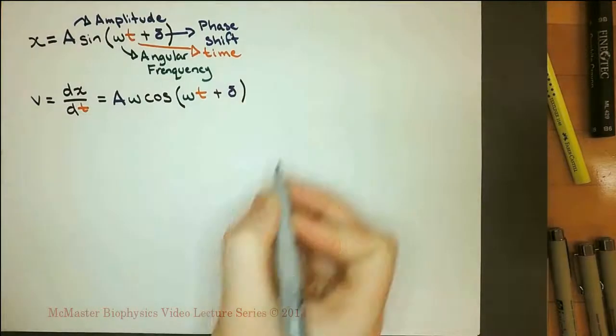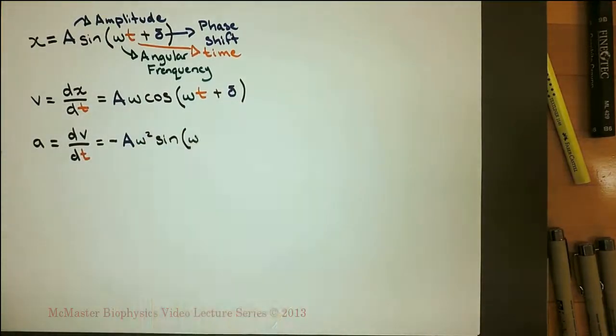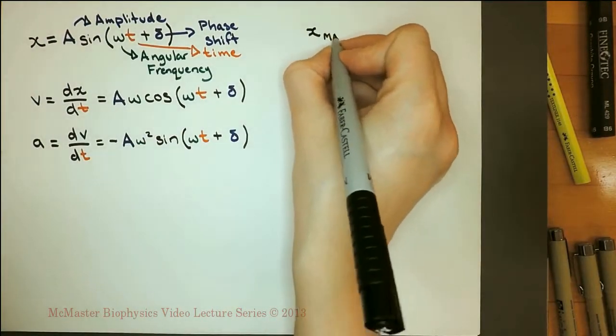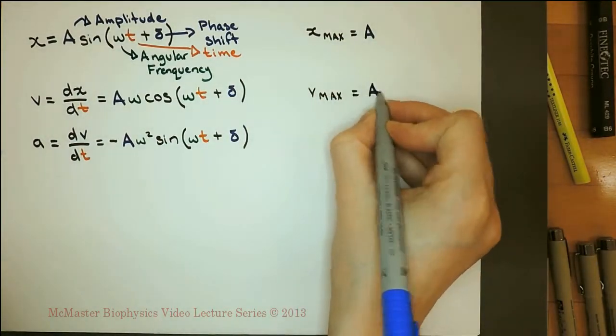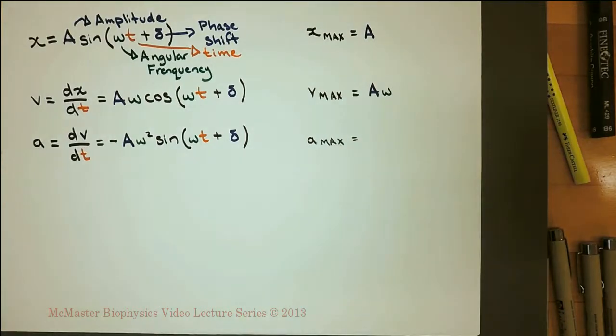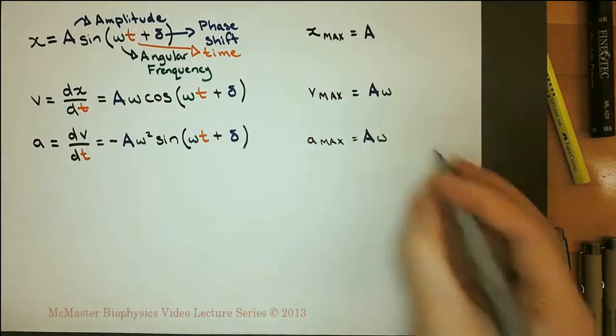We can determine the functions for velocity and acceleration by taking the derivative. Because the sine or cosine of any value cannot be greater than one, we can determine the maximum position, velocity, and acceleration of the object.